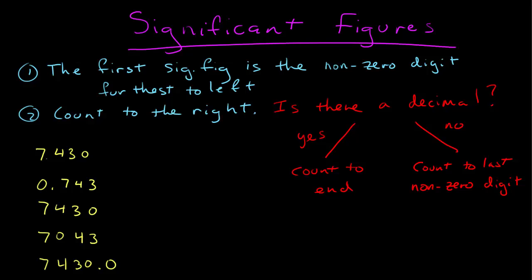In this video, I'm going to show you how to determine the number of significant figures in a number. So you follow these rules. The first significant figure is the non-zero digit furthest to the left.